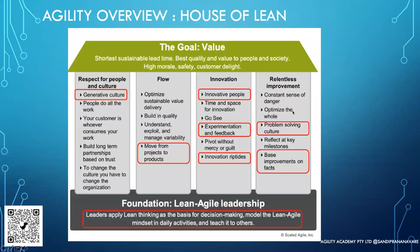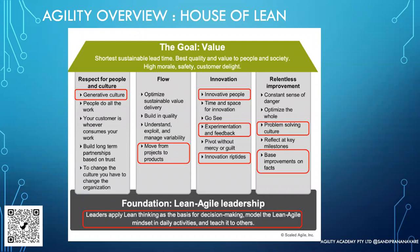If you have to look at only one thing — one page — it is the House of Lean. Those with exposure to the Scaled Agile Framework may have seen this. Essentially, when you want to have agility through lean, you need to focus on value from the customer's point of view — what the customer wants — and then make that value available at the shortest sustainable lead time. The emphasis on 'sustainable' is because we don't want value delivered by compromising on quality, team morale, or what the customer is looking for.